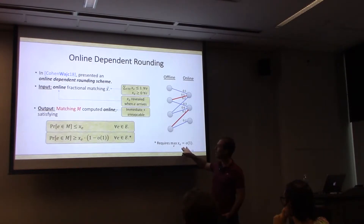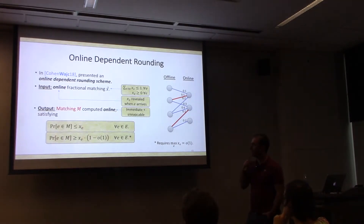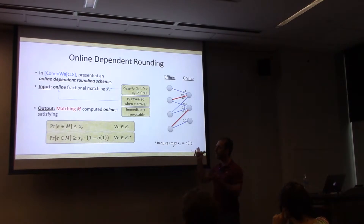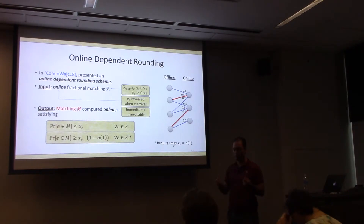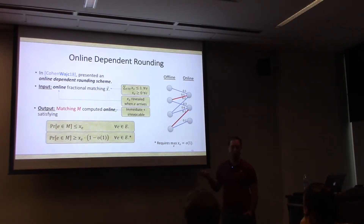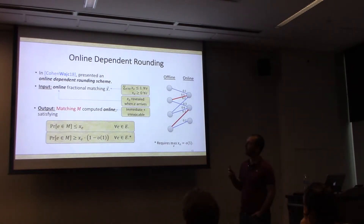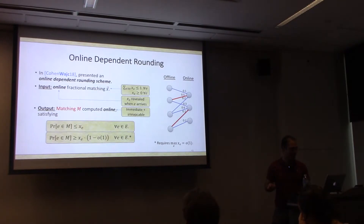This is a really nice tool: if you can solve some fractional relaxation of a matching-based problem, you can obtain the same values integrally without losing too much. Our general approach: compute an alpha-star competitive fractional edge coloring X online, then round each of the alpha-star-delta fractional matchings using this rounding scheme. Every edge is matched roughly with its marginal probability, so every vertex should be matched roughly its degree many times.